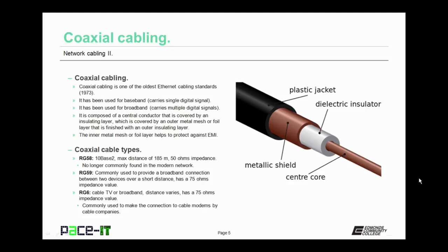Then we have RG6, which is used for cable TV or broadband. The distance that RG6 can span varies, but it still has a 75 ohms impedance value. It's commonly used to make the connection to a cable modem by the cable company.